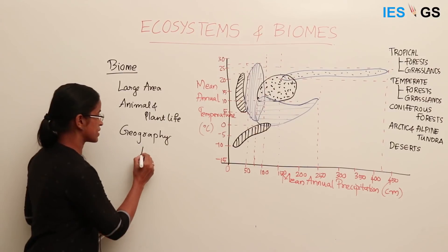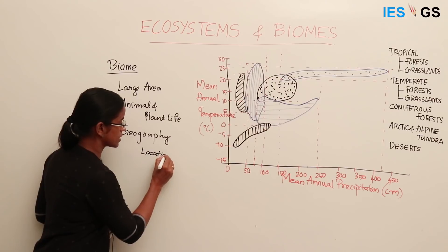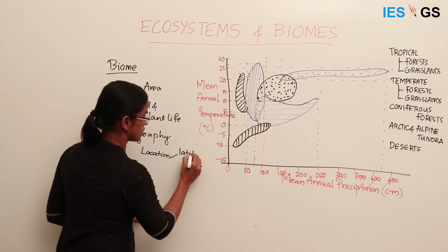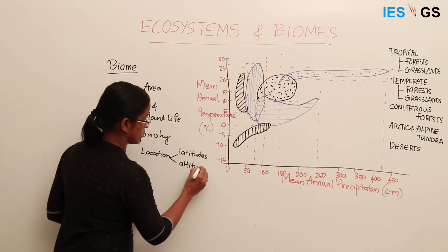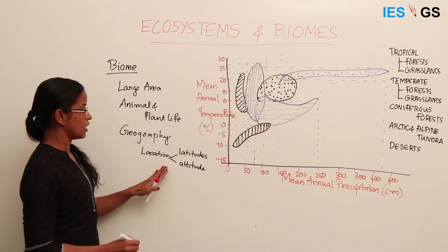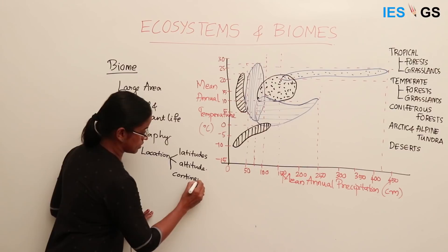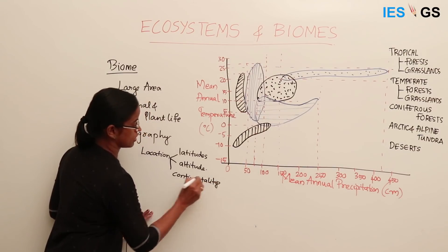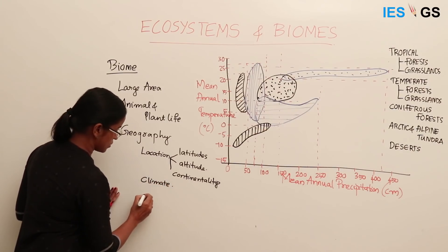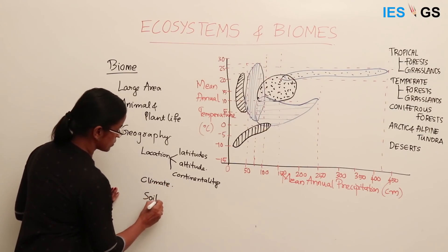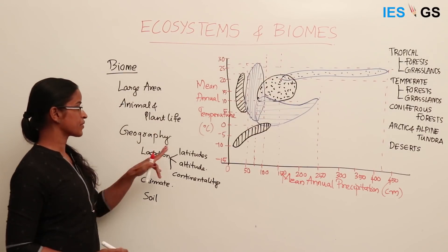The geographic factors include: location in terms of latitudes, altitude, continentality, climate, and soil. These are the geographic factors determining the plant and animal life in a biome.